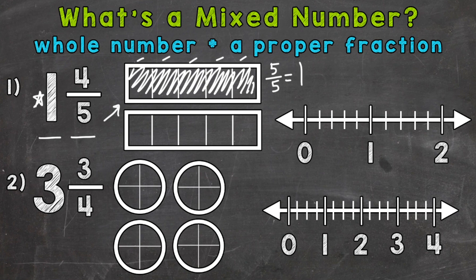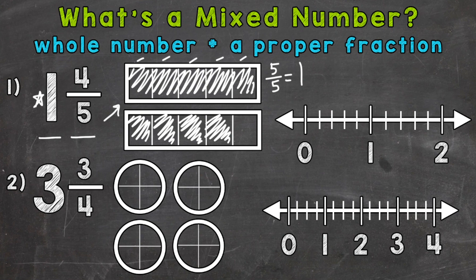Now we need to represent the four fifths. So this would be one and one fifth, one and two fifths, one and three fifths, and then one and four fifths — there is our model. This is a value that is in between one whole and two wholes. You'll notice that we almost have two wholes there, but not quite.